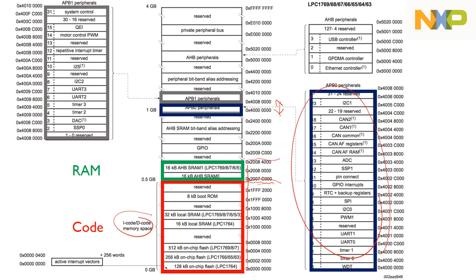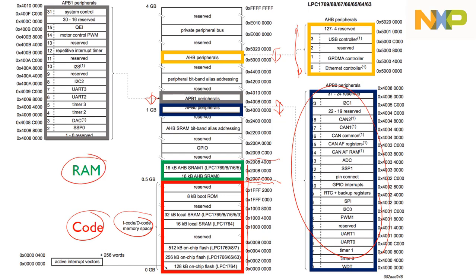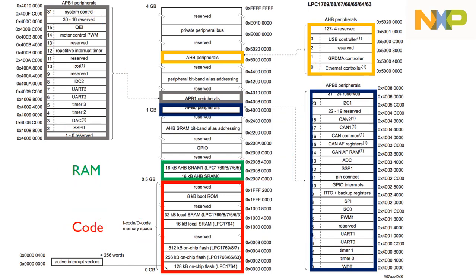There's also another set of peripherals in a further memory space. So even though we've got all these different memories — flash memory, RAM, and all the registers that make up the different peripherals — they're all part of the same unified memory map.